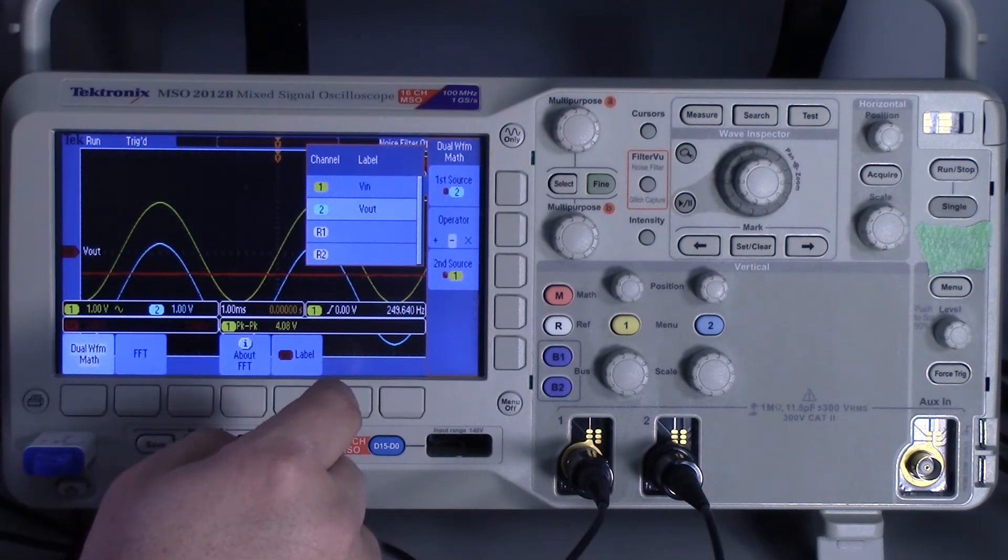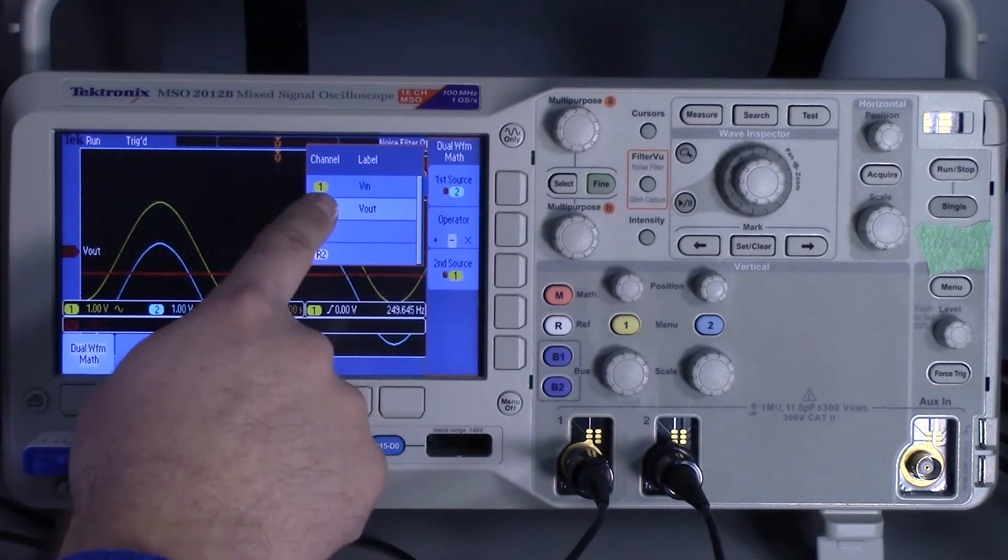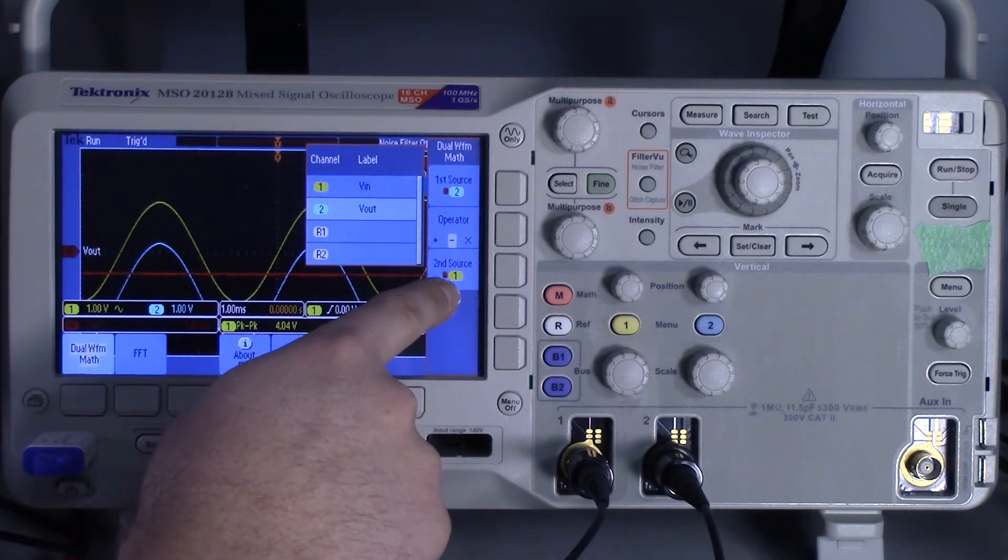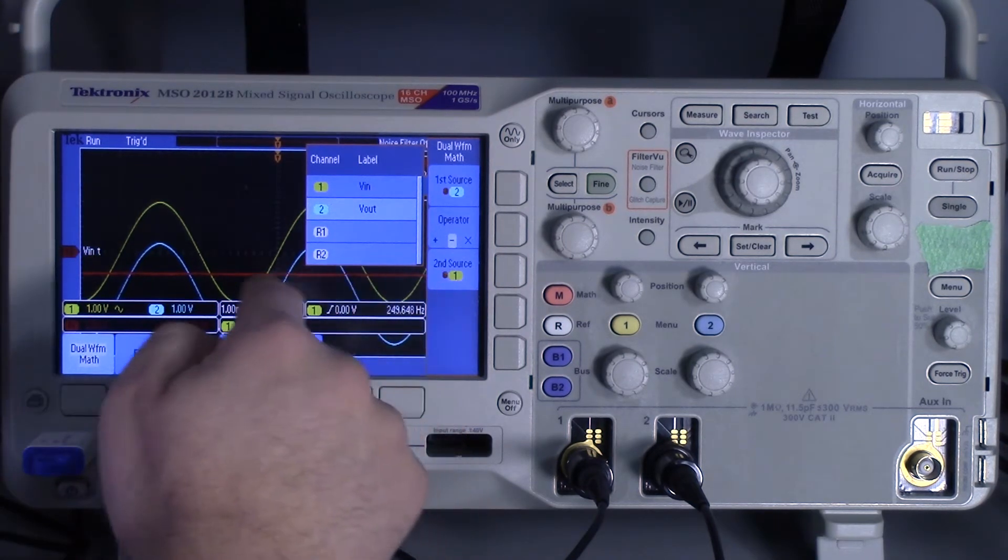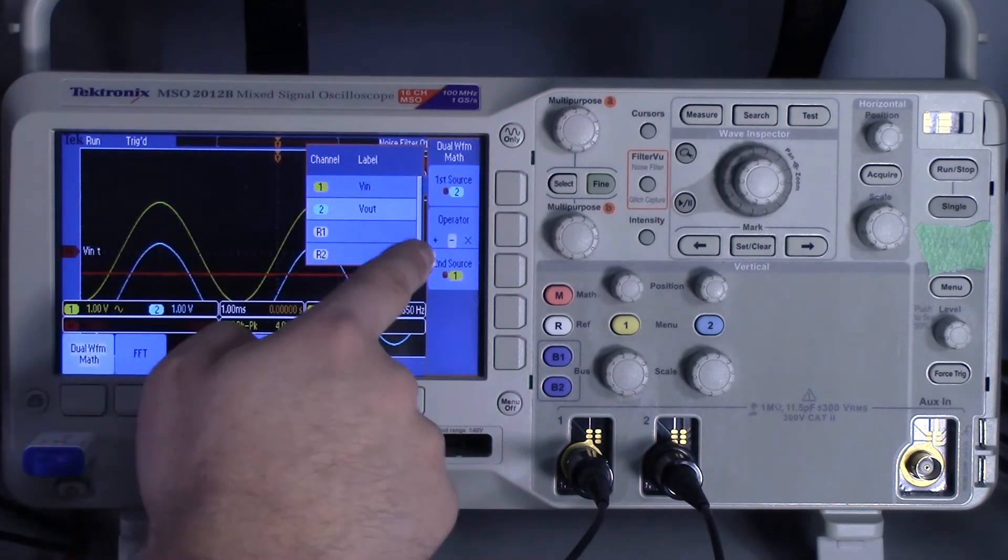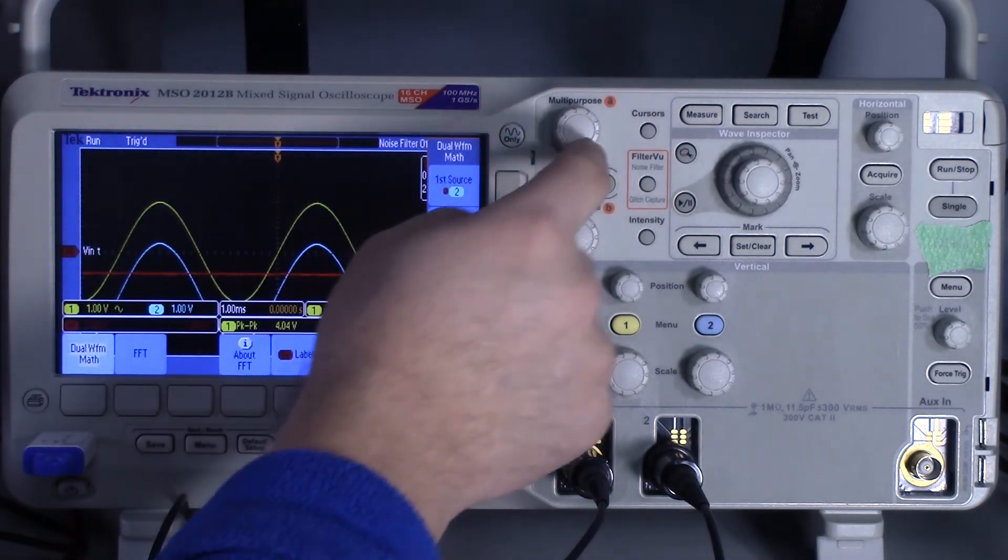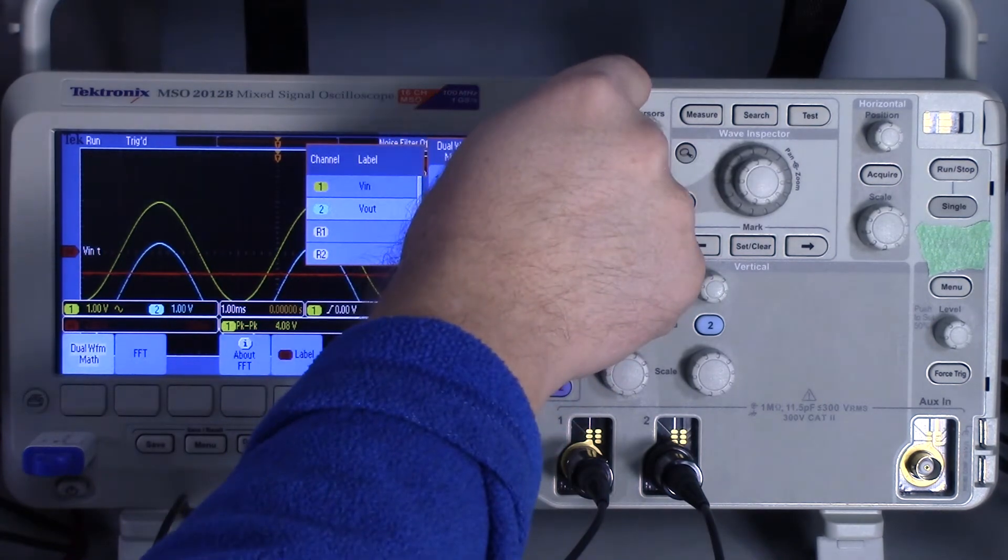So I don't want channel 2 minus channel 1. I want my first source A, I want that to be channel 1, I want that to be input.